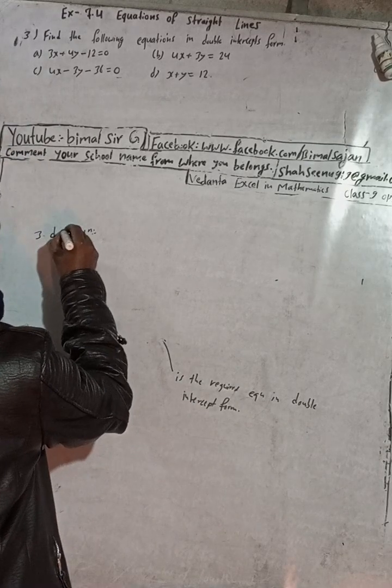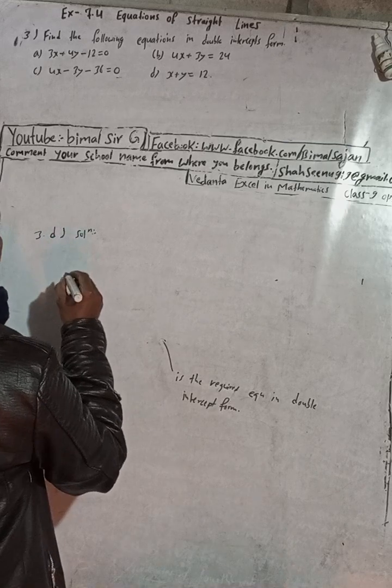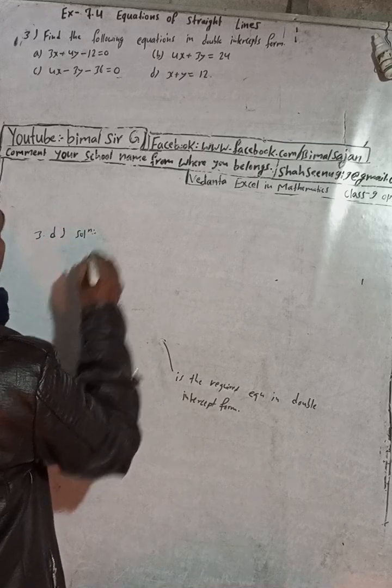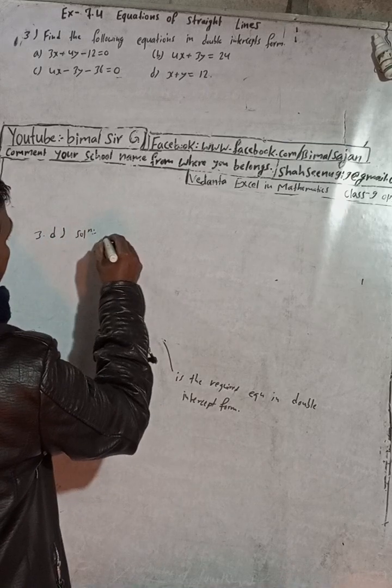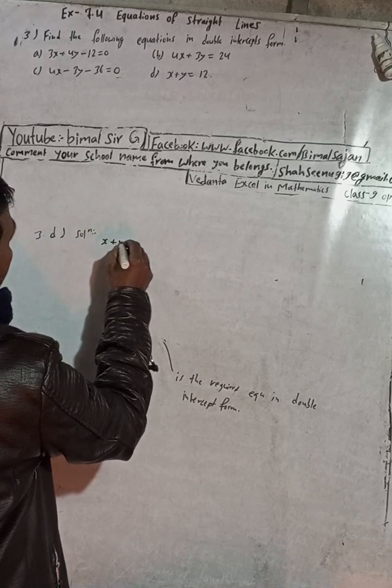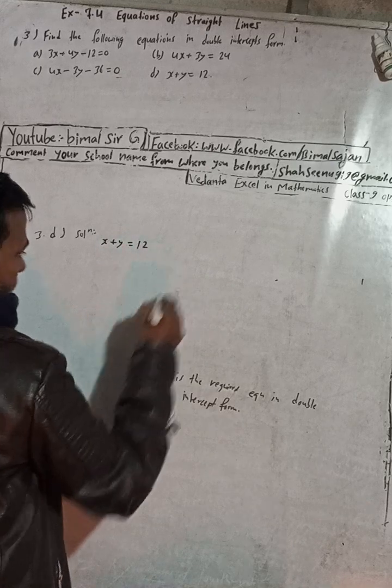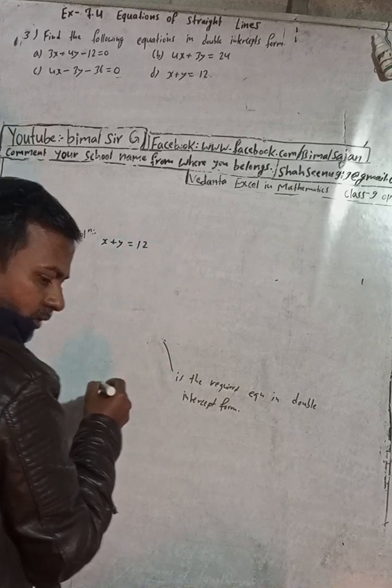Now number D. Here: x plus y equals 2l. Now divide both sides by 2l.